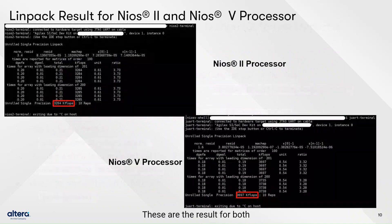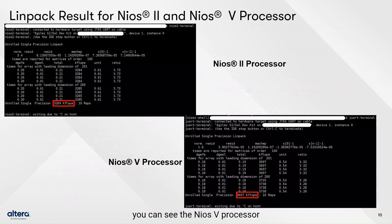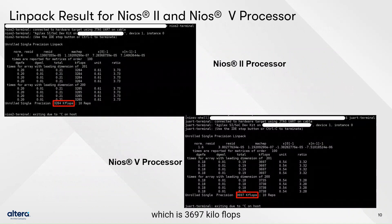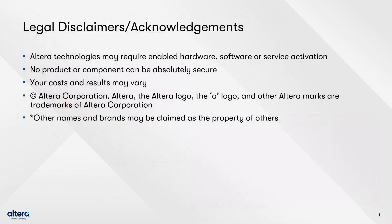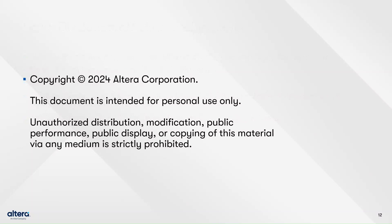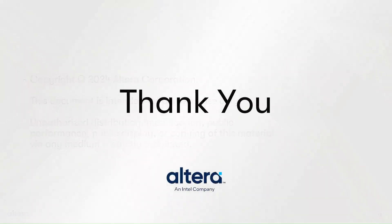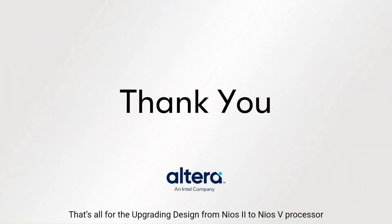These are the results for both Neos 2 and Neos 5 processors. The Neos 5 processor shows better performance at 3,697 kilo flops compared to the Neos 2 processor at 3,284 kilo flops. That concludes the walkthrough for upgrading a design from Neos 2 to Neos 5 processor.